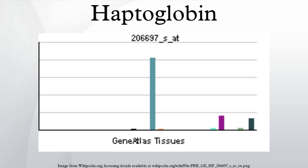Haptoglobin functions to bind free plasma hemoglobin, which allows degradative enzymes to gain access to the hemoglobin while at the same time preventing loss of iron through the kidneys and protecting the kidneys from damage by hemoglobin. For this reason it is often referred to as the suicide protein.